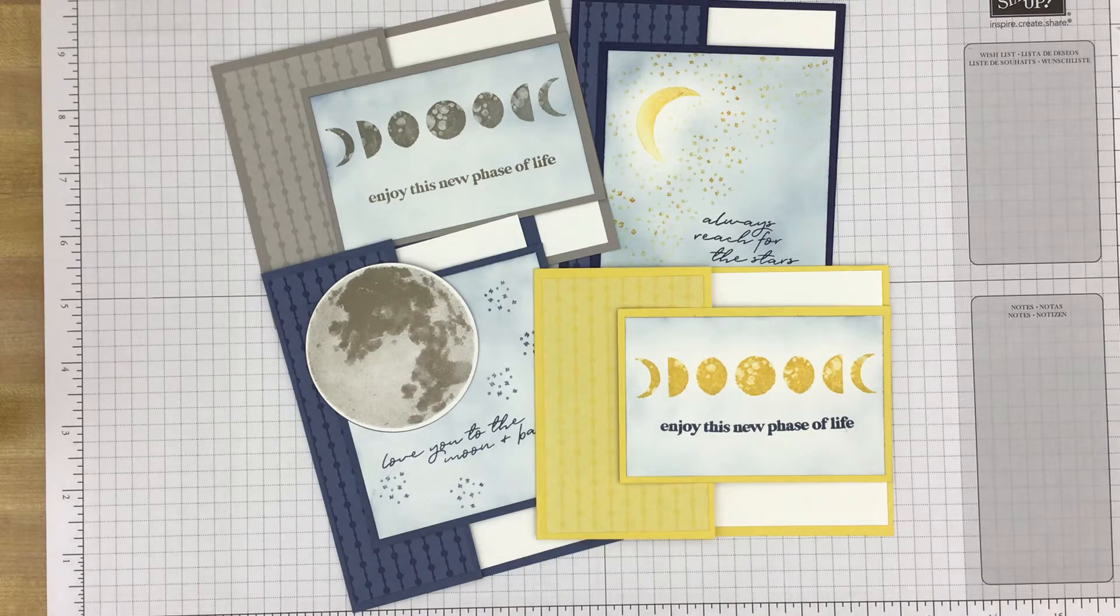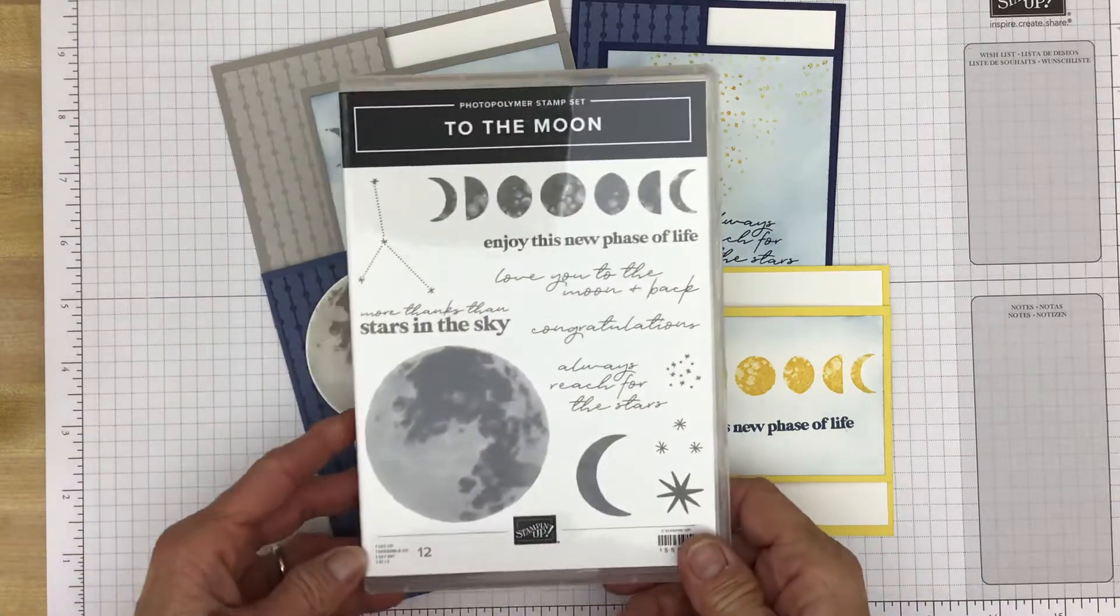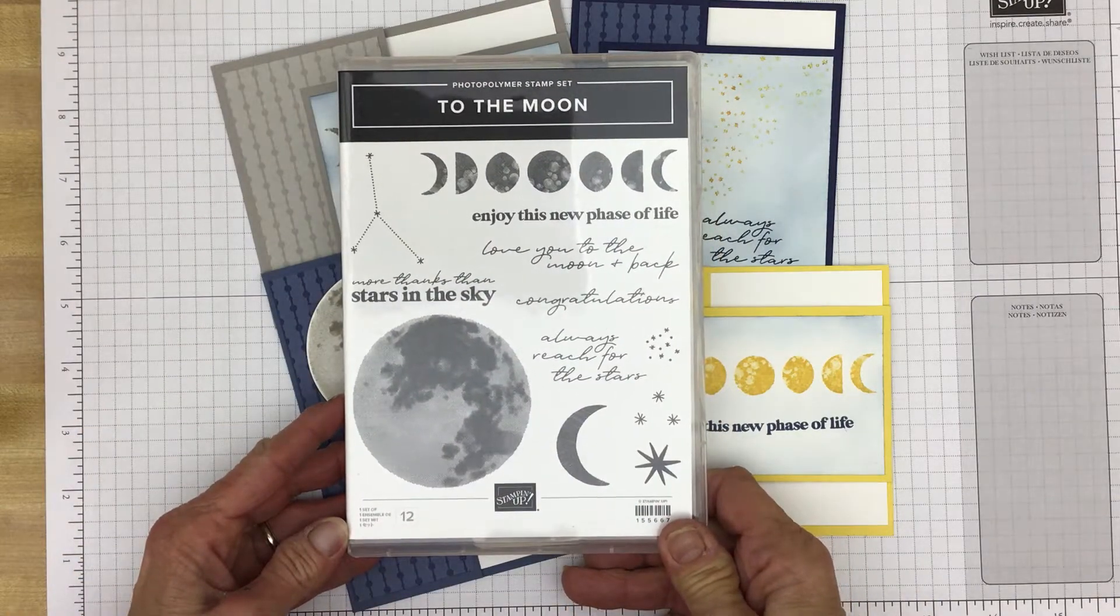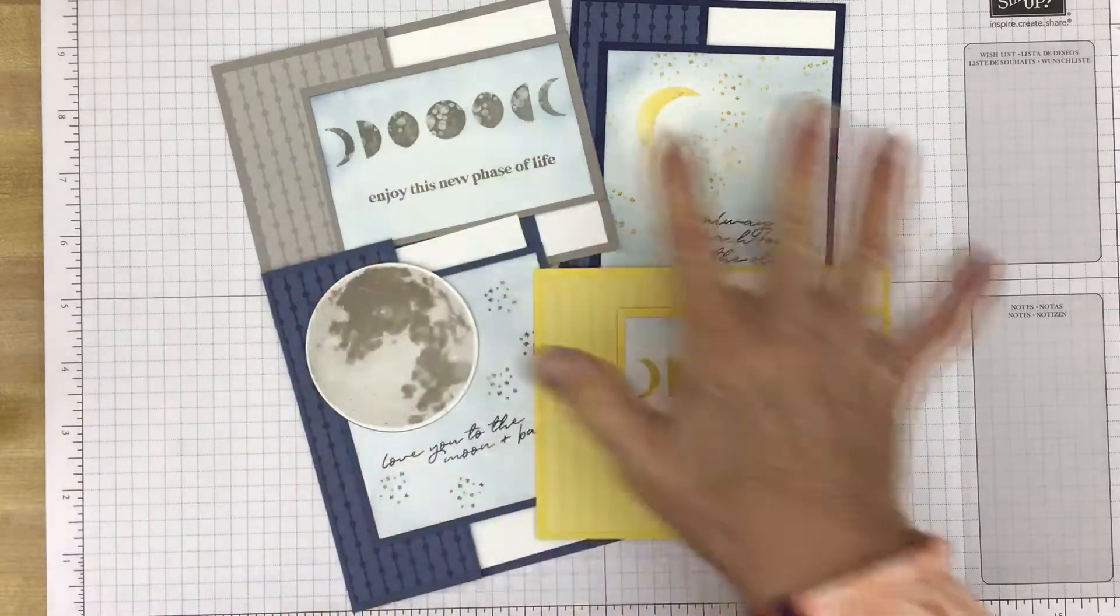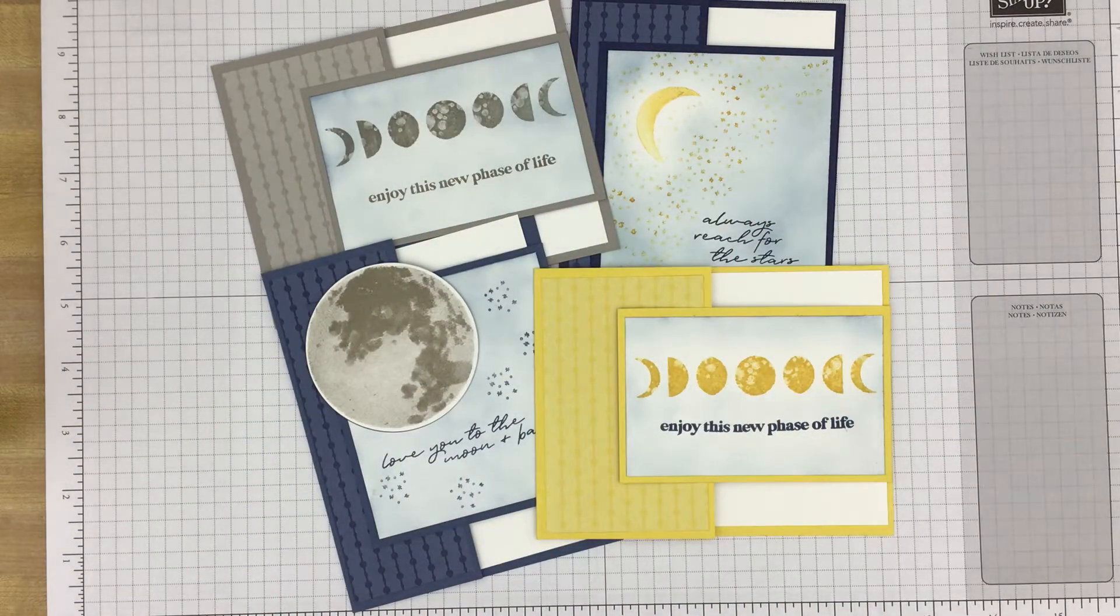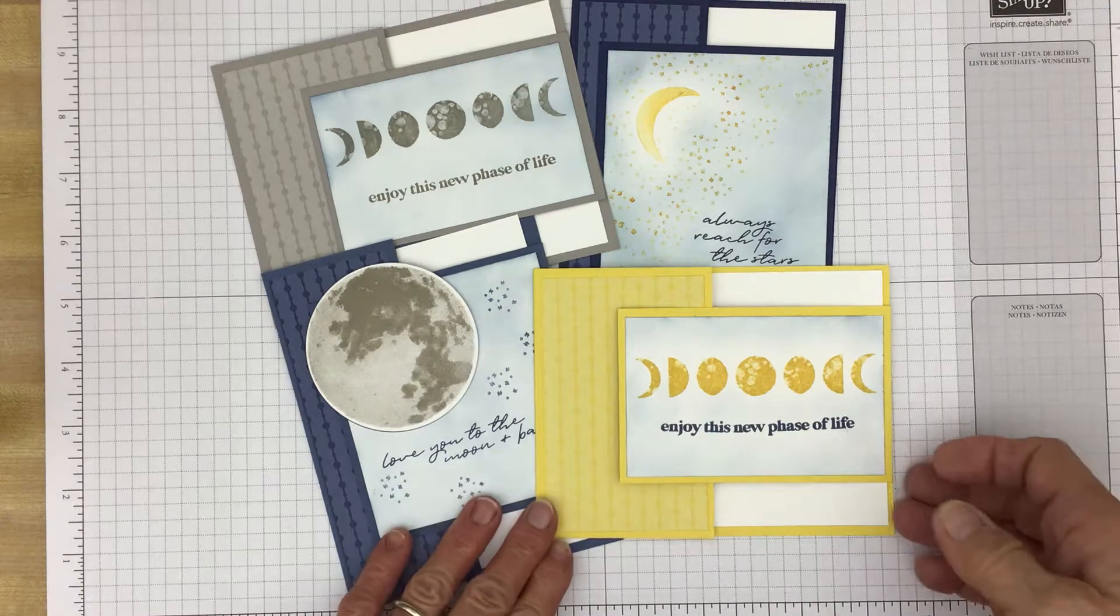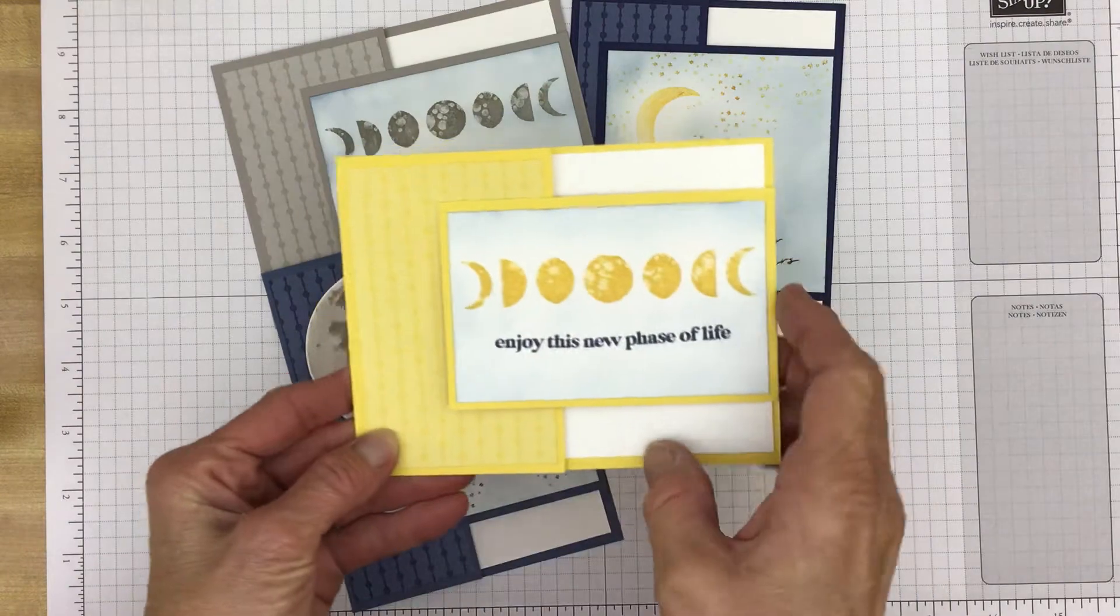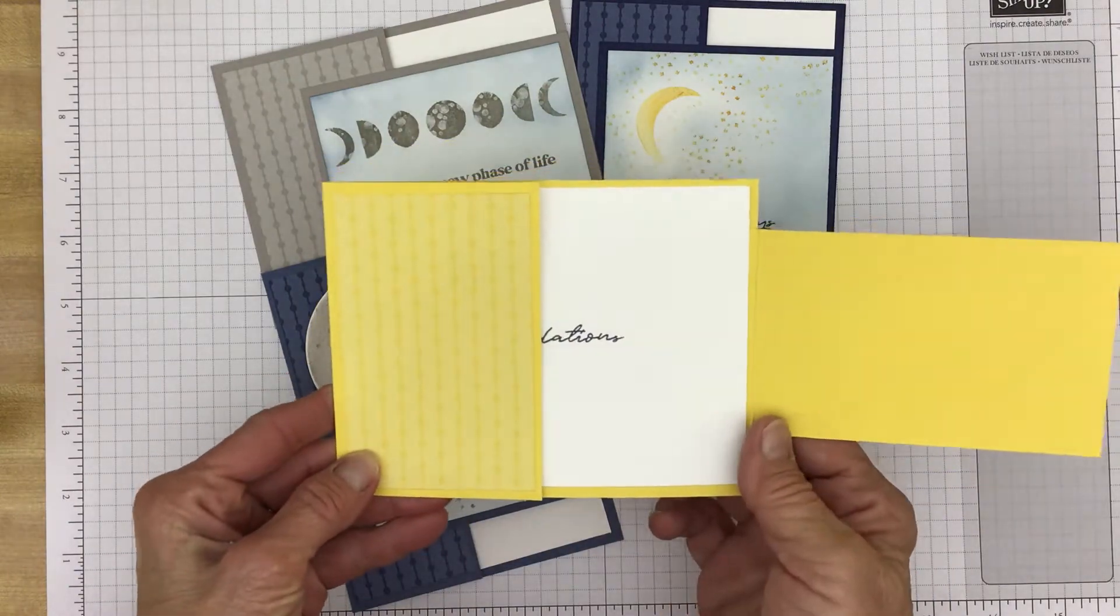Today's cards that I have for you I made with the new to the moon stamp set. It is in the current annual catalog. As you can see I have four cards and these cards are what I call a front flap card or a front flap panel card because they have this panel that is actually a flap.